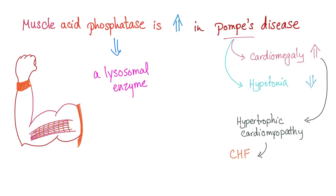Let's leave the prostate and go to your muscles. Muscle acid phosphatase is increased in cases of Pompe's disease. Pompe's disease is a problem with your heart and muscle. Your muscles are very weak in this disease, and acid phosphatase is a lysosomal enzyme.